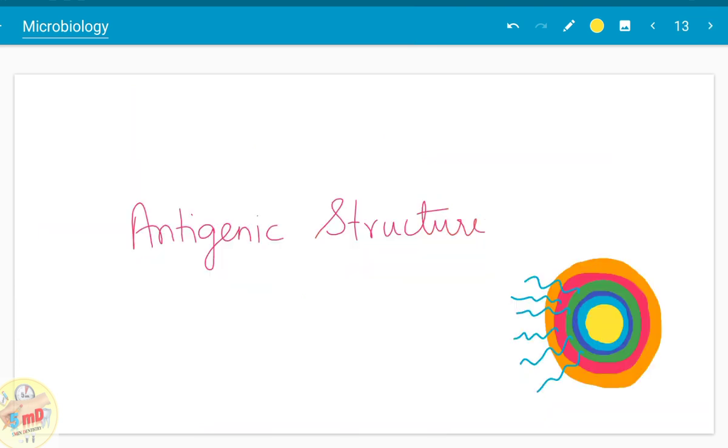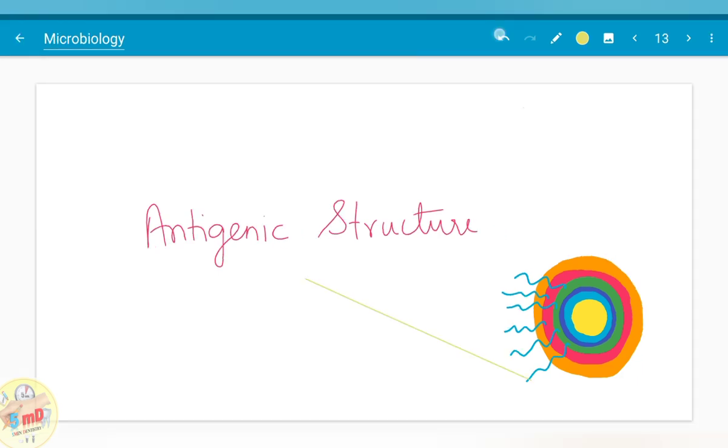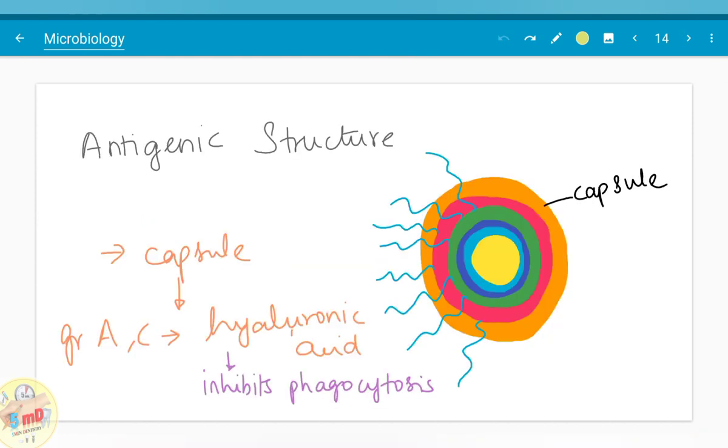Now we will see about the antigenic structure of Streptococcus pyogenes. The antigenic structure starts with the capsule, the outer component. The group A and C of the Lansfield classification have hyaluronic acid as the capsule. It inhibits phagocytosis, therefore it is an important virulence factor.